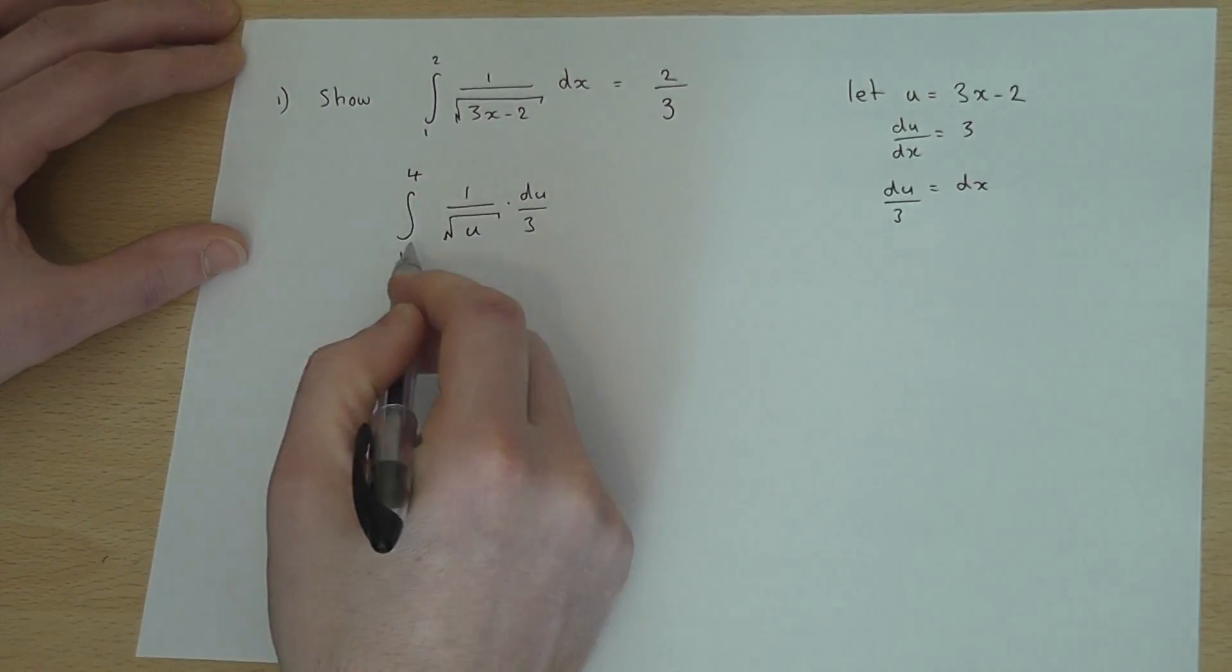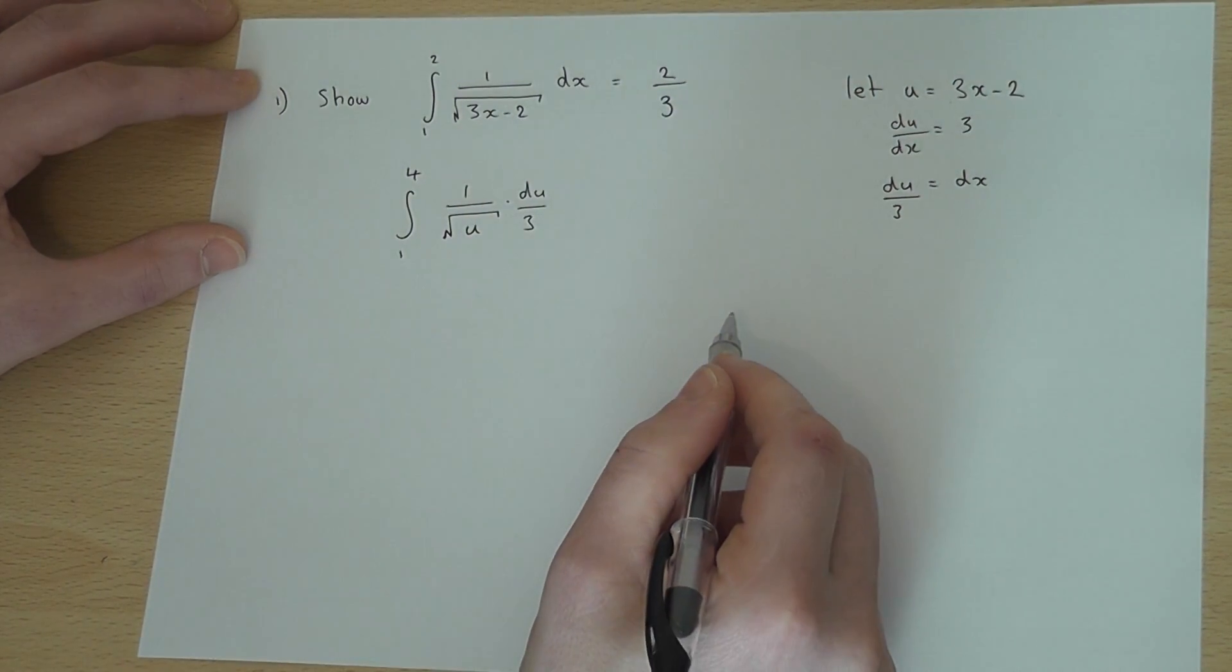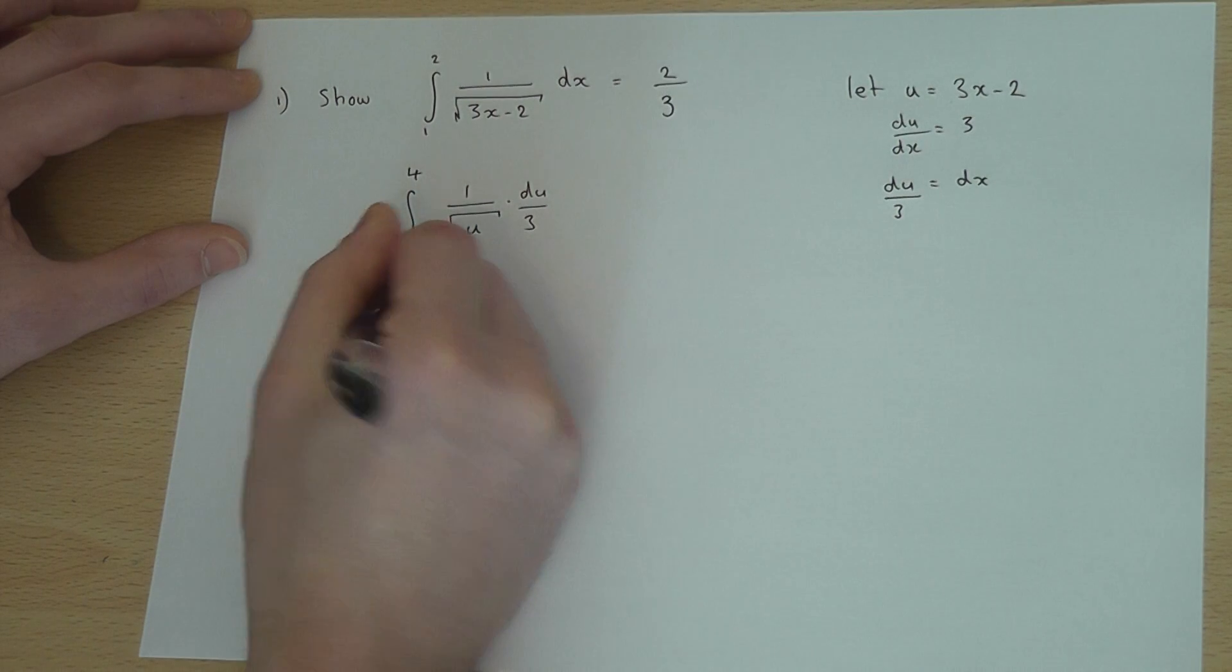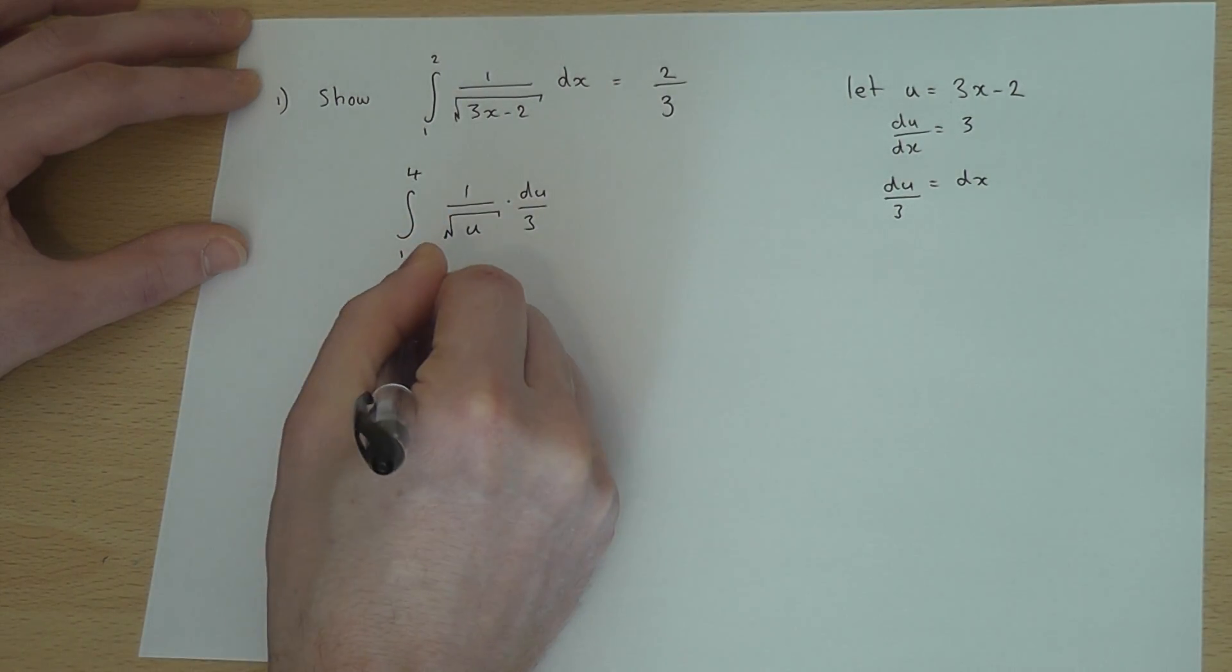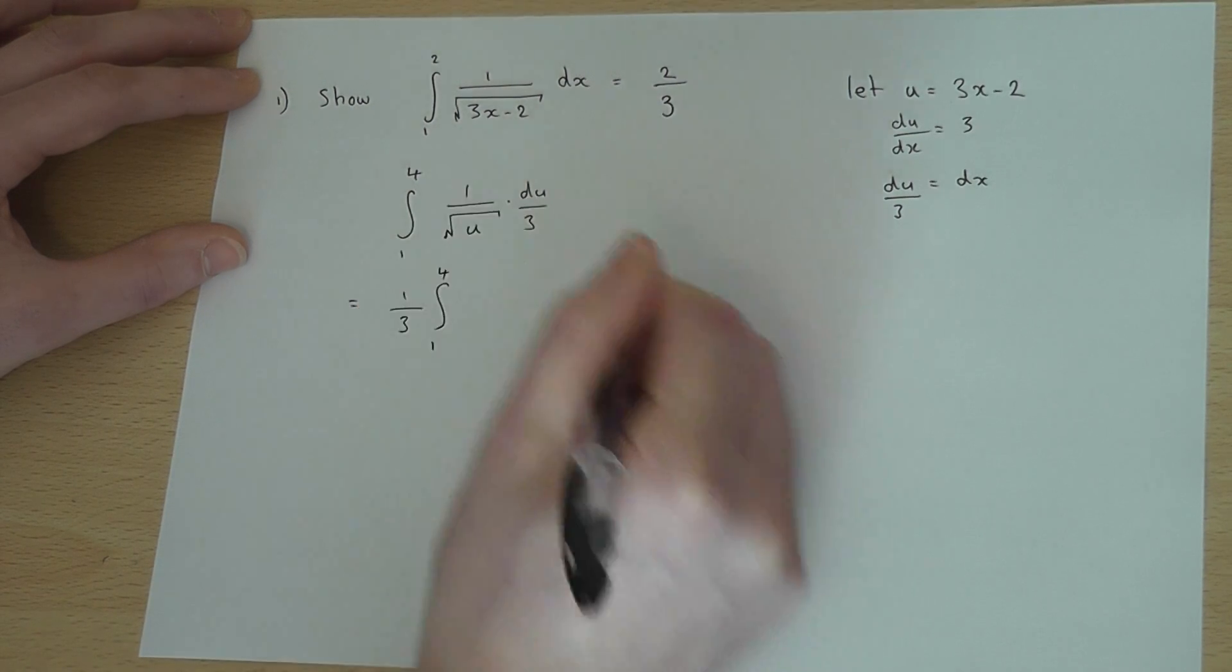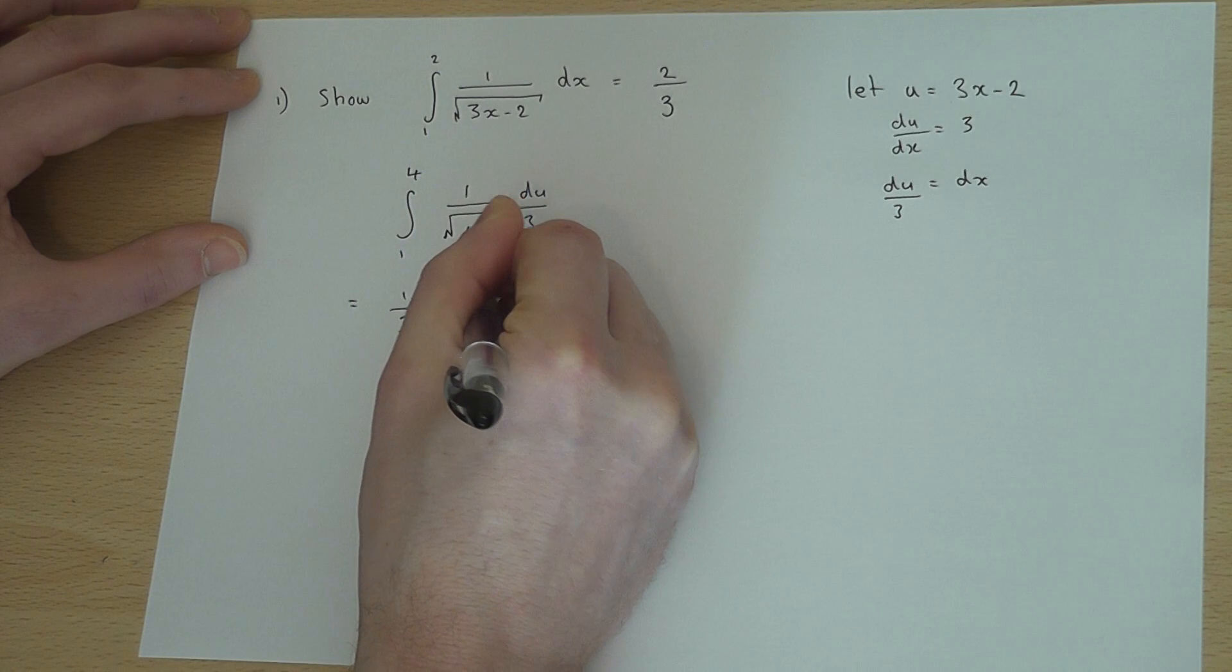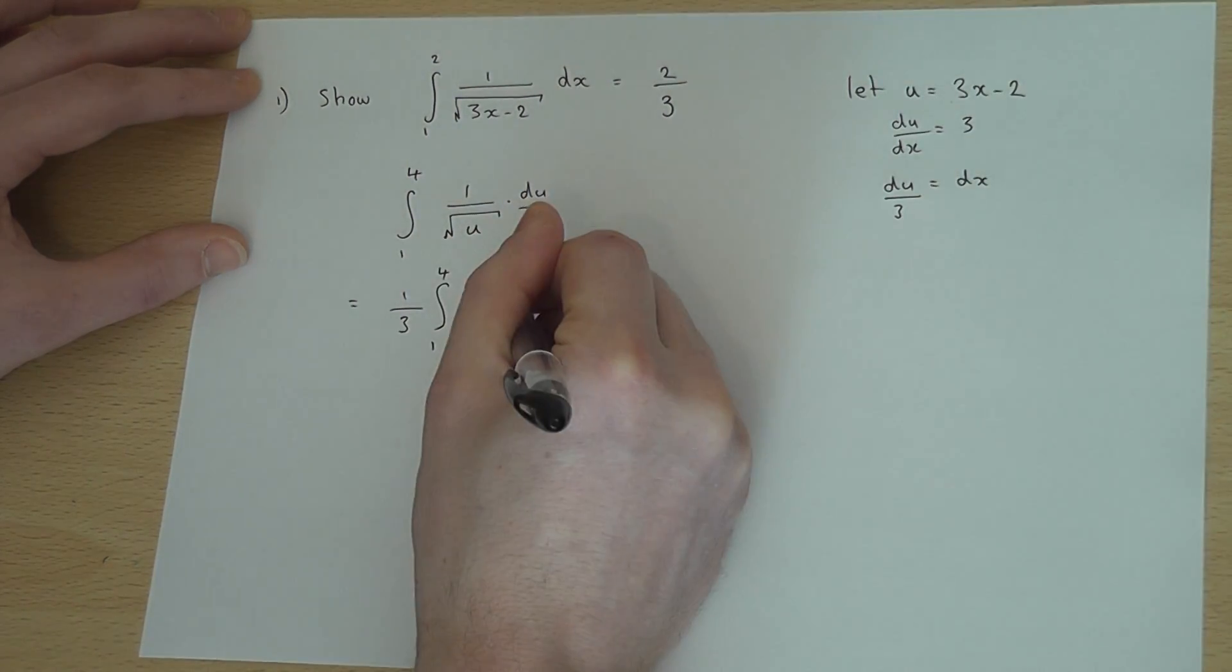So my limits have changed. My variable has also changed from x to u. Now, I can then do the following. There's a factor of a third, which I will pull out, an integral of 1 to 4. I can write 1 over u as u to the power of minus 1 half du.